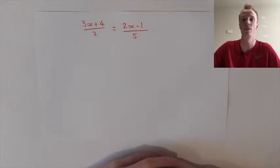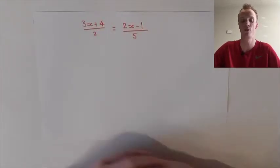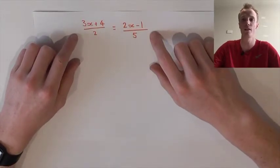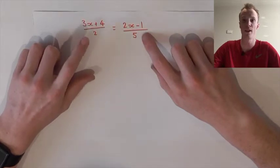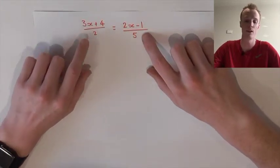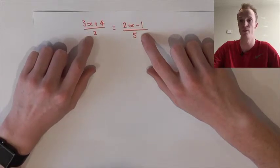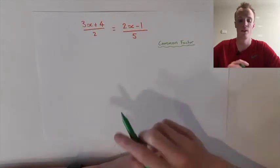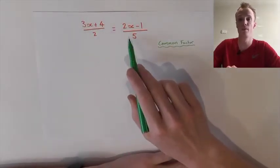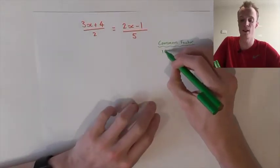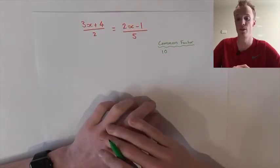Our goal here is the same as previously — to isolate the x value on one side of the equation. To achieve this we must first simplify the equation by removing these fractions. To do this we must find a common factor between the two denominators of each fraction, so here it's the common factor between the 2 and the 5. One way that will always work is to multiply the bottoms of these fractions together. So 2 times 5 is 10, meaning 10 is a common factor between these two numbers.